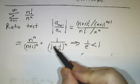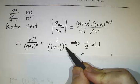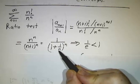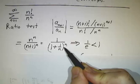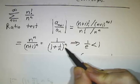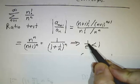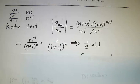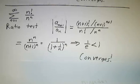This simplifies to 1 over (1 + 1/n)^n, and we know that the limit of (1 + 1/n)^n is e. So this ratio is 1 over e, and 1 over e is some number less than 1 — it's about 0.37. So the whole thing converges.